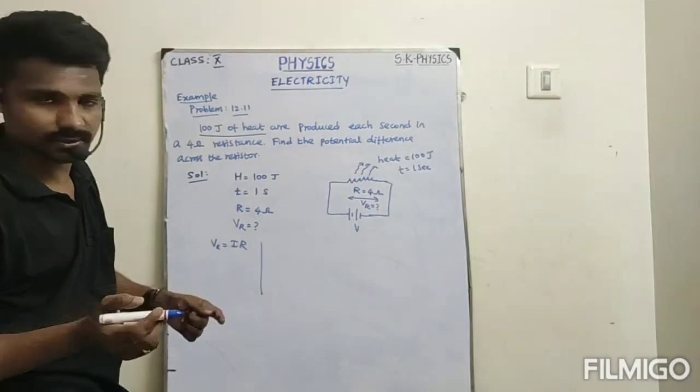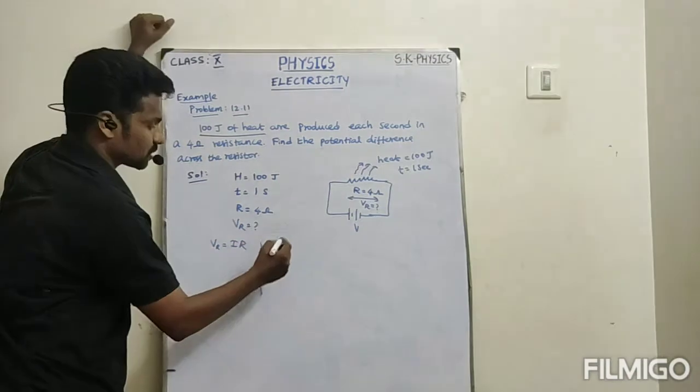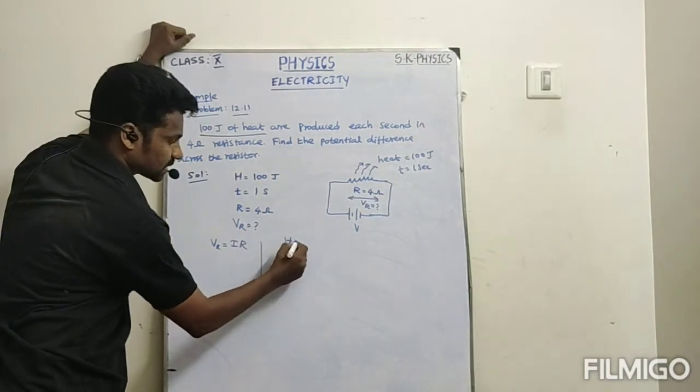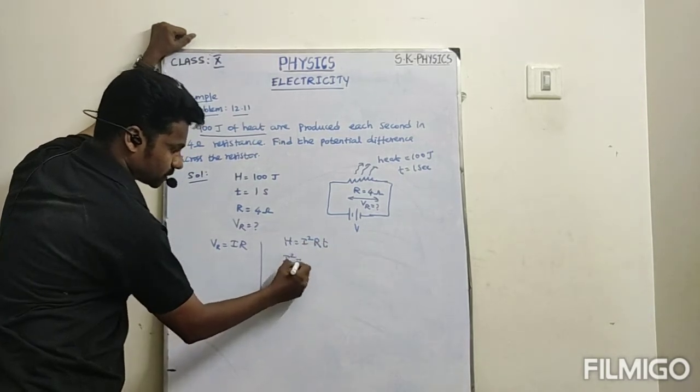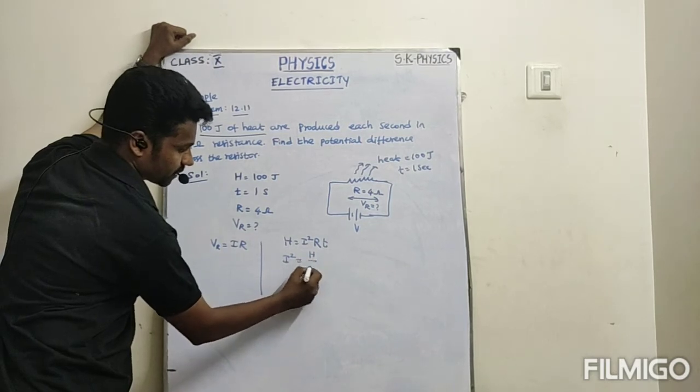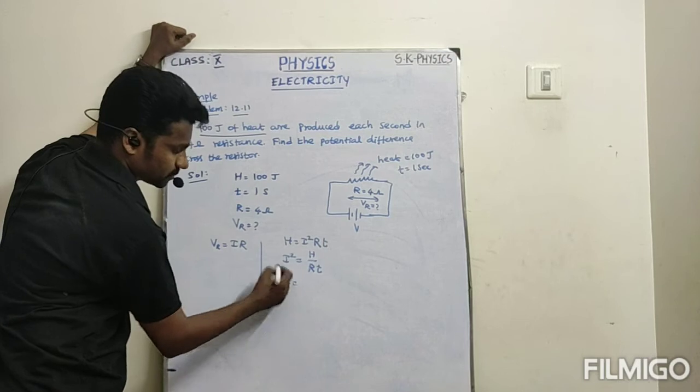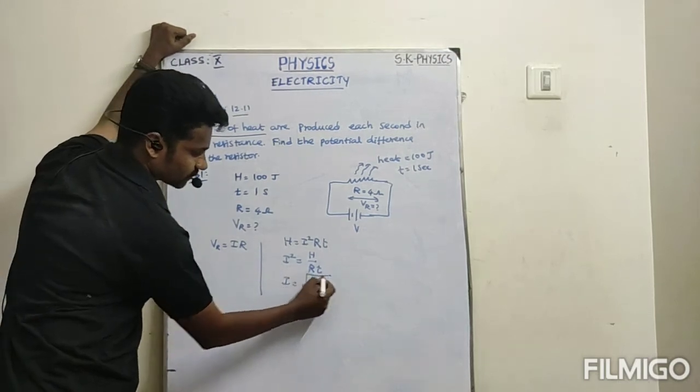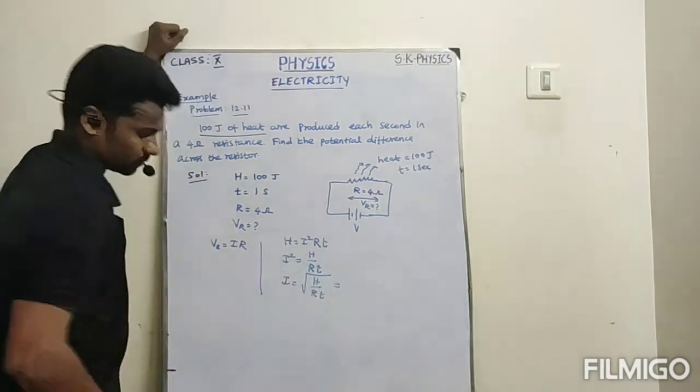Heat and current relation you know by using Joule's law of heating effect. Joule's law of heating is H is equal to I squared RT. Therefore I squared is equal to H divided by R into T. Therefore I is equal to square root of H divided by RT.